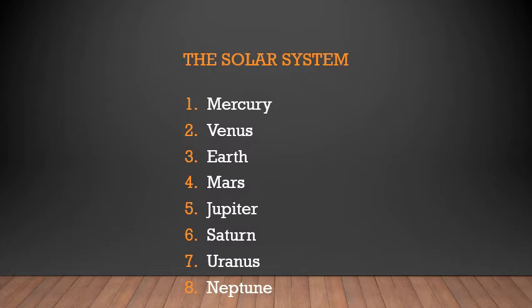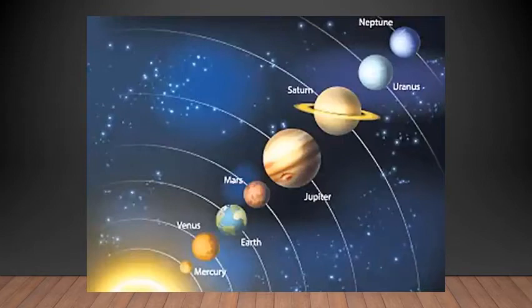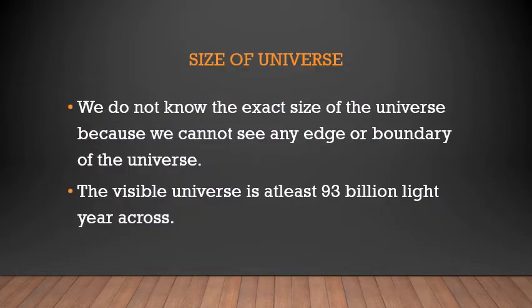The solar system you have learned about previously. The sun and the eight planets form the solar system. The names of the eight planets are Mercury, Venus, Earth, Mars, Jupiter, Saturn, Uranus, and Neptune. The sun and all the other eight planets together form the solar system.